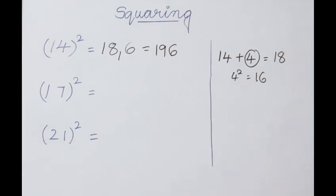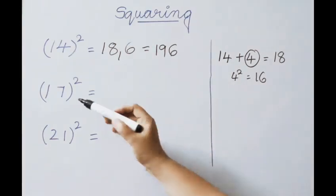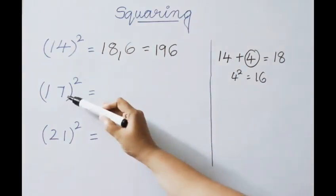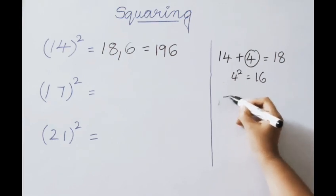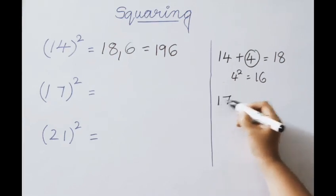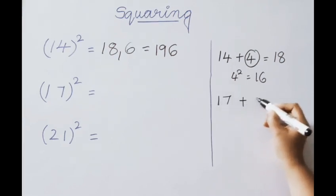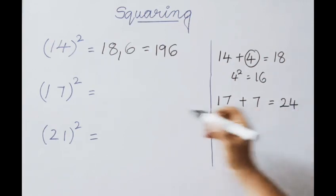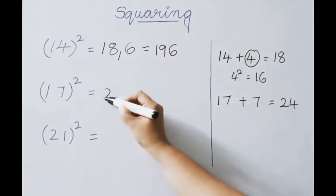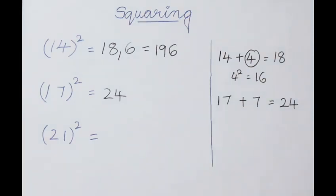Let us see the next example: 17 squared. For base 10, the excess value is 7. For the given question 17, add the excess value 7: 17 plus 7 gives us 24. That is our first part answer: 24.